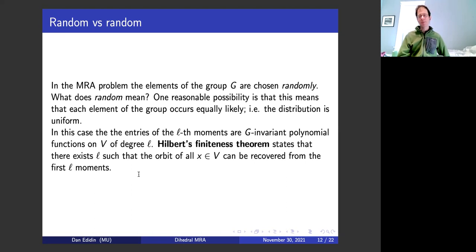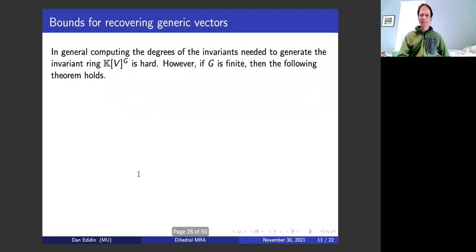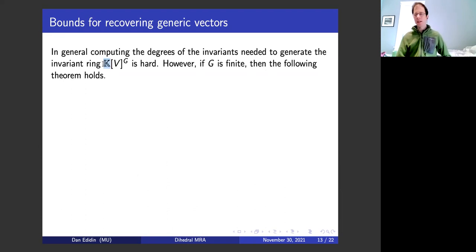However, if the distribution is not uniform — I don't know a theoretical guarantee off the top of my head. For example, if the distribution is like a delta function, it might not even be true. The problem of computing, in general, the degrees of invariants needed to generate the invariant ring — that's a hard computational algebra problem. On the other hand, there's a very nice theorem — not due to us — in a paper by Bandera, Bloomsmith, Khalil, Perry, Weed, and Wine.